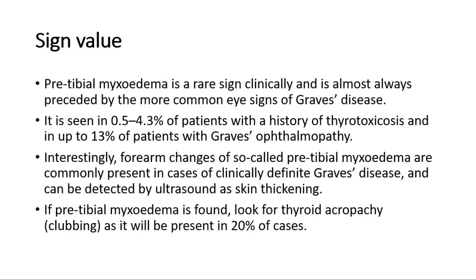Pre-tibial myxedema is a rare sign clinically, and is almost always preceded by the more common eye signs of Graves' disease. It is seen in 0.5 to 4.3% of patients with a history of thyrotoxicosis, and in up to 13% of patients with Graves' ophthalmopathy. Interestingly, forearm changes of so-called pre-tibial myxedema are commonly present in cases of clinically definite Graves' disease, and can be detected by ultrasound as skin thickening. If pre-tibial myxedema is found, look for thyroid acropacki or clubbing, as it will be present in 20% of cases.